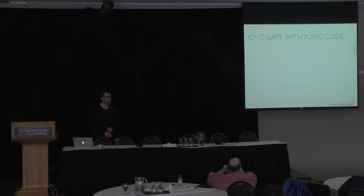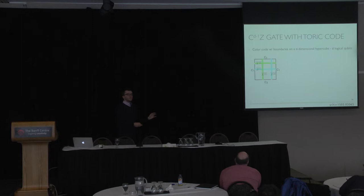Can we say something about gates from the dth level of the Clifford hierarchy? What I will try to explain to you really quickly is how to implement a d qubit control-Z gate with the toric code. To do that, I would need to consider the color code with boundaries on a d-dimensional hypercube.